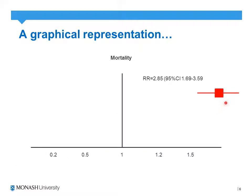Here we have a graphical representation where the line of no effect is 1. Anything less than 1 is beneficial; anything above 1 is harmful. Because we have a relative risk of 2.85, it is above 1, indicating that the exposure is harmful. Our confidence intervals of 1.69 to 3.59 do not cross the line of no effect, which would also indicate that this is a statistically significant difference.